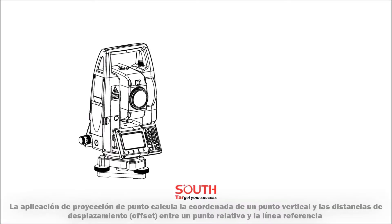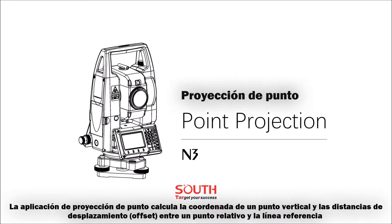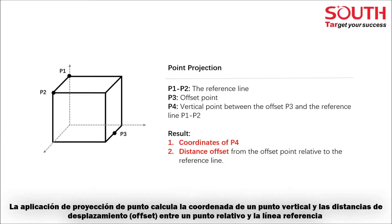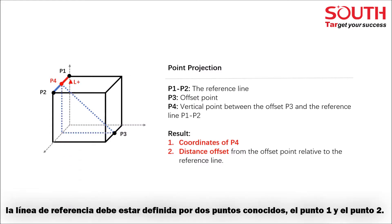The Point Projection application calculates the coordinates of the vertical point and distance offsets from the offset point relative to the reference line. The reference line should be defined by two known points, P1 and P2.